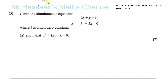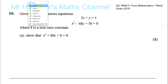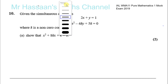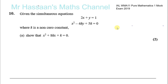What we need to do here is substitute from one of these equations into the other. The easiest way with this type of question is to take the linear part and look for either the x or the y term which doesn't have anything multiplying it except 1, so you don't have to deal with fractions. Here I can rearrange to make y the subject, so you have y equals 1 minus 2x.